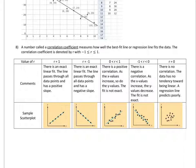And if r equals 0, that means there's no correlation. The data has no tendency towards being linear. And your scatter plot just looks like a random mess of points and cannot really be used for prediction.